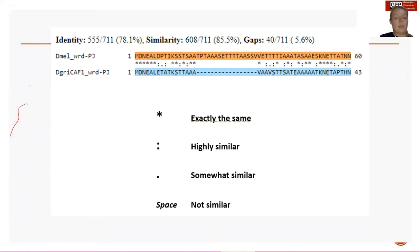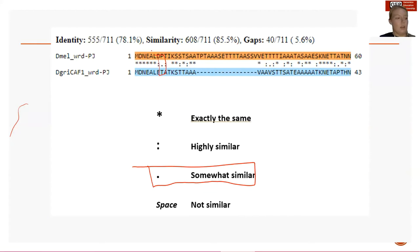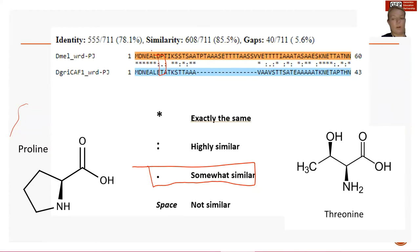A period means that the amino acids are different and have somewhat similar properties. Here we see a period between proline and threonine — proline is nonpolar and uncharged while threonine is polar and uncharged, so they share some characteristics but not all. These alignments will contribute to our similarity score but will not contribute to our identity score.